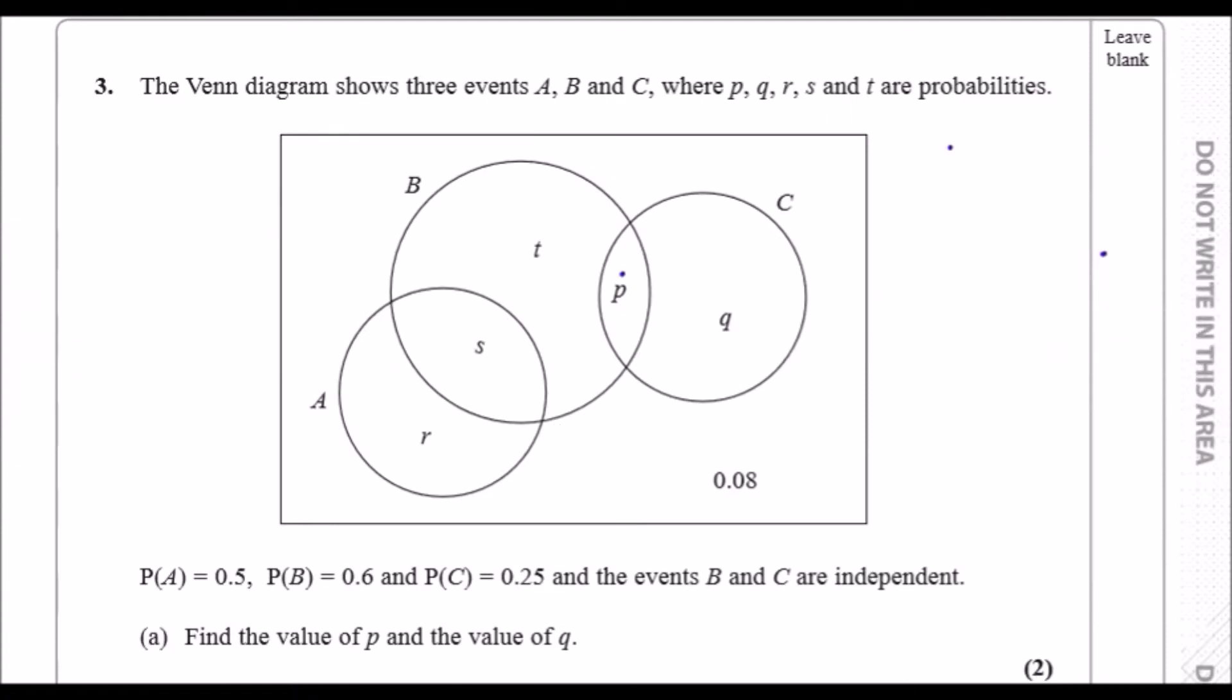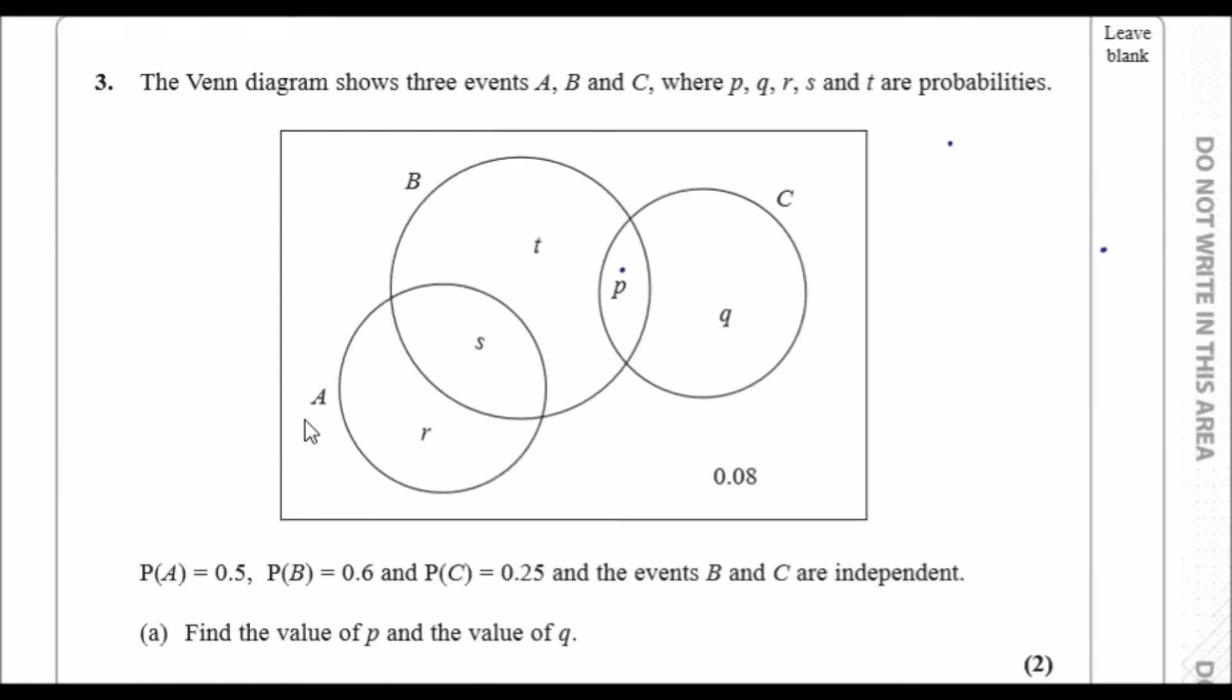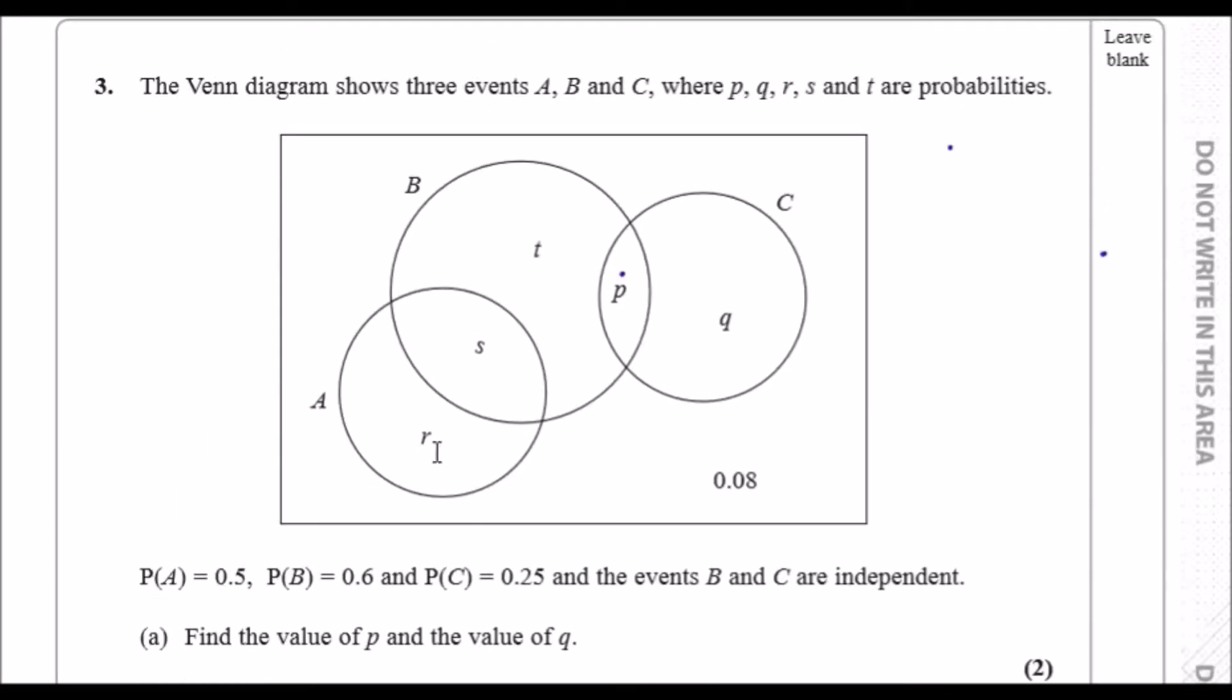Okay guys, number three, let's check it out. We've got a Venn diagram, a triple one, which shows three events A, B, and C with each of their respective probabilities. According to the statement, the probability of A is 0.5, so we can say instantly that r plus s equals 0.5. That's basically everything in A.